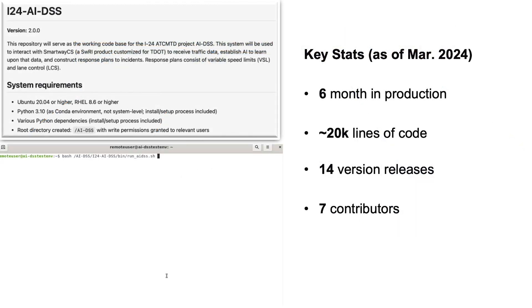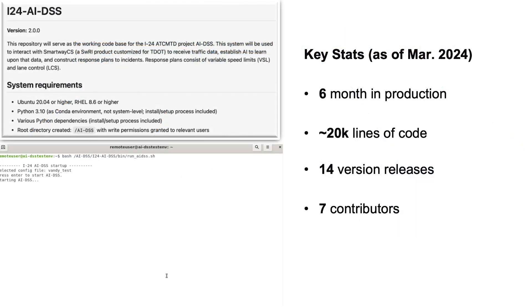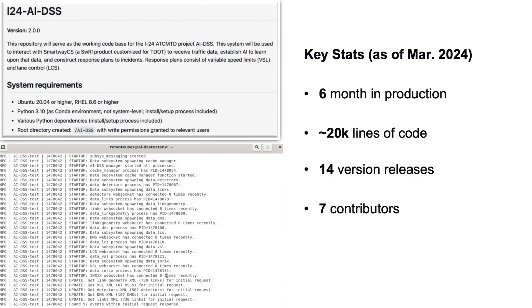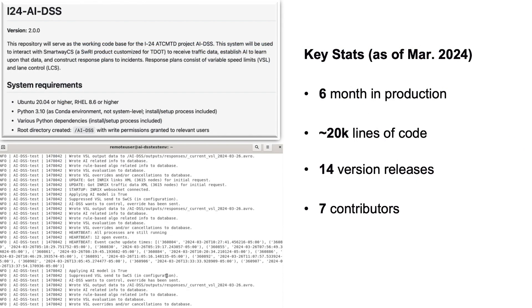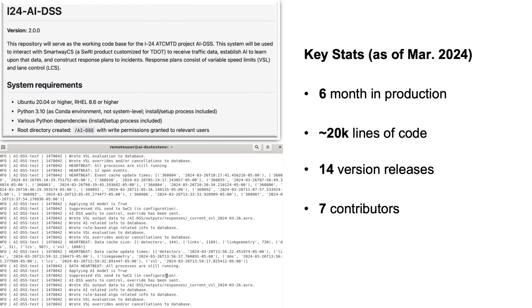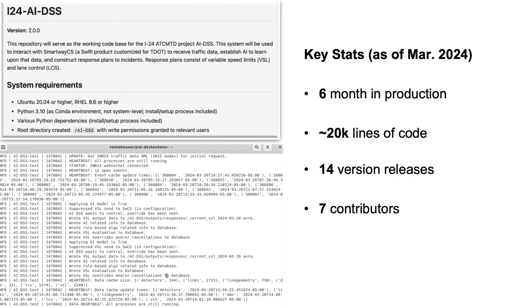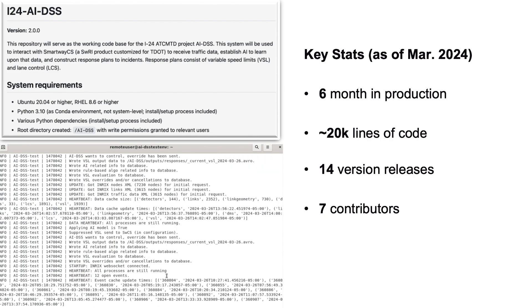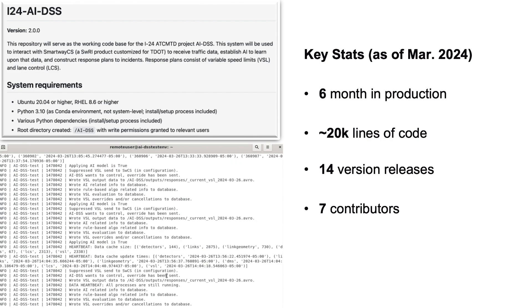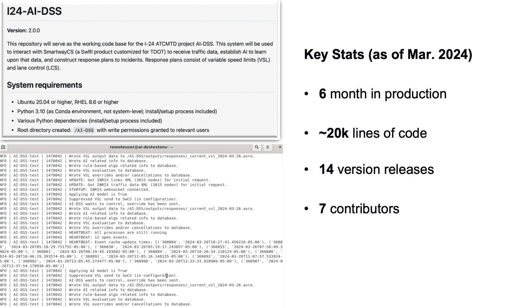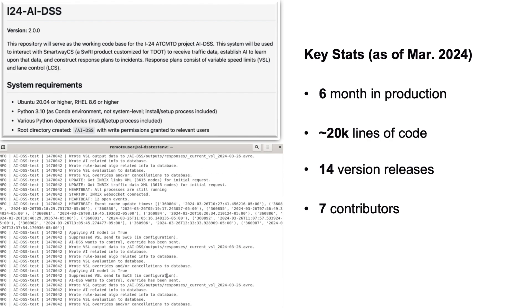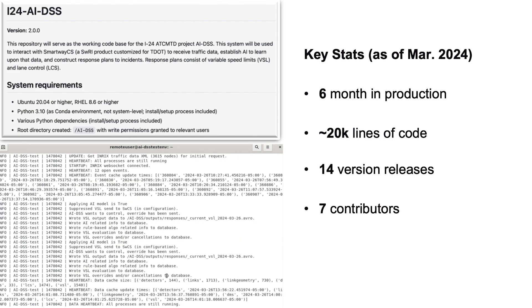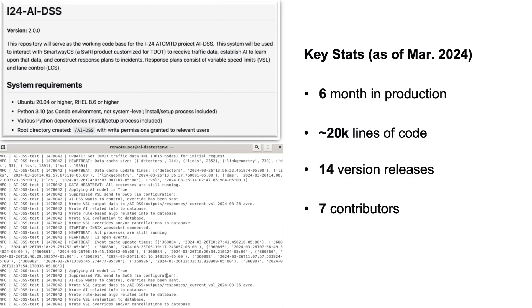As of March 2024, AI DSS has been in production for six months, with around 20,000 lines of code, 14 version releases, and 7 contributors.